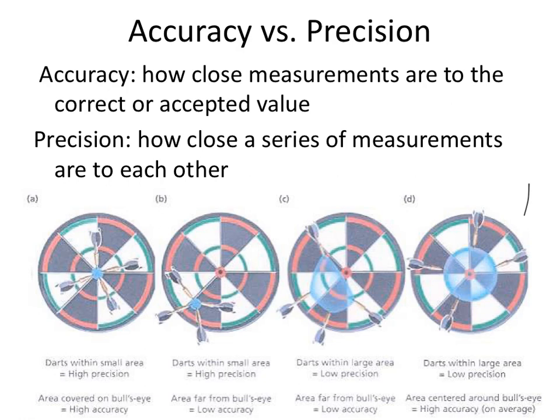Accuracy and precision are two words that we actually use interchangeably in our everyday colloquial language. However, they actually have two very different meanings when it comes to data and measurements in science and engineering. Accuracy is how close a measurement is to a correct or accepted value. So if you describe somebody as being six feet tall and they're really only five foot two, you are so far from an accurate description that people would look at you funny. So accuracy is how close you are to that correct or accepted value.